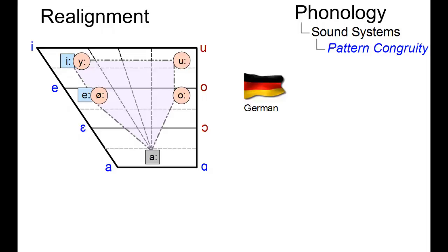The German tense monophthongs constitute an almost perfect pattern. One vowel, however, seems to disrupt the pattern. E as in Käse. It has no back counterpart.